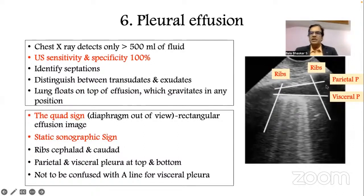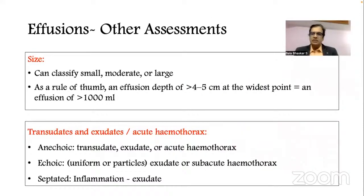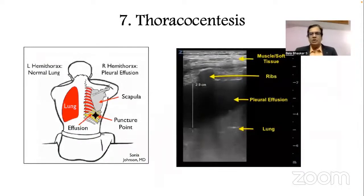Two signs for pleural effusion: the quad sign — a static sonographic sign showing two ribs on either side with parietal and visceral pleura defining a quadrilateral fluid space — and the sinusoidal sign, a dynamic sign in M-mode where normally the lung moves towards and away from the probe with respiration, but with effusion this respiratory variation decreases and the distance between parietal and visceral pleura diminishes. Effusion character — exudate versus transudate, or blood — can be assessed by echogenicity and probe selection. Ultrasound also guides thoracocentesis for safe drainage.